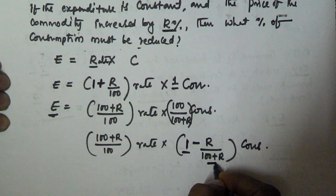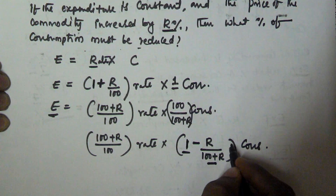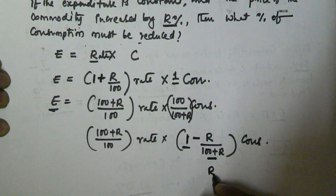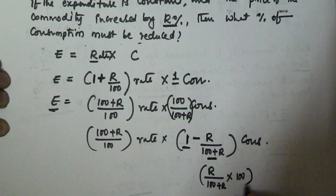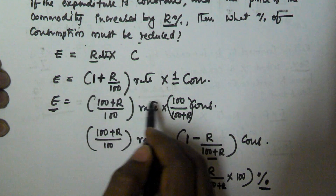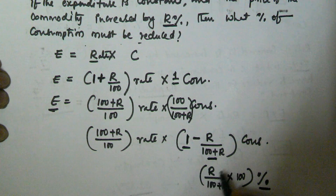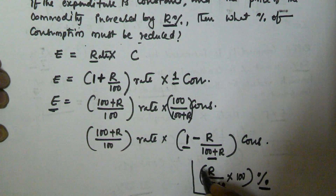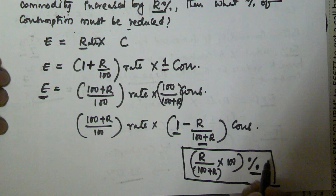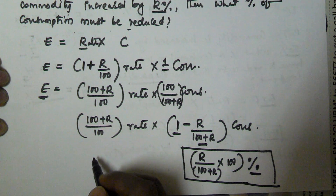So this is the fraction. To convert this fraction into percentage, we multiply by 100. That is, R by 100 plus R, into 100 percentage. So that means, if the rate of the commodity is increased by R percentage, then the percentage we have to reduce in consumption is given by R by 100 plus R, into 100 percentage. This will give the reduction in consumption so that the expenditure remains constant.